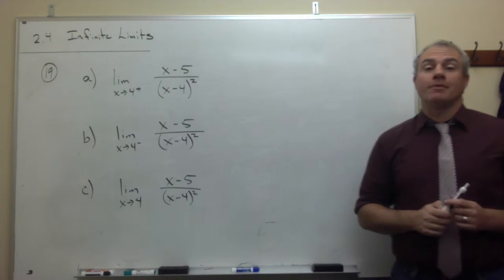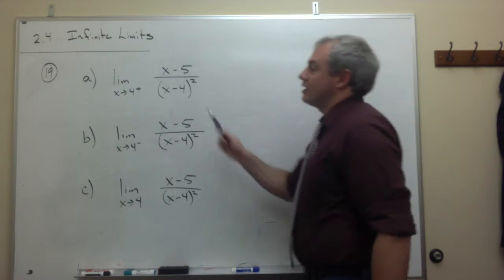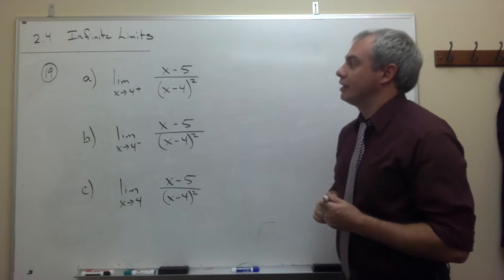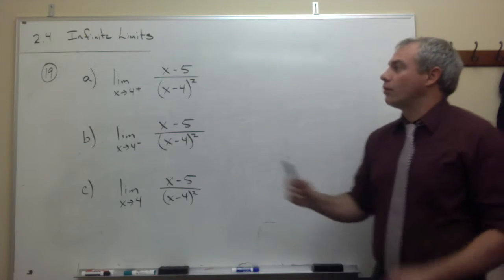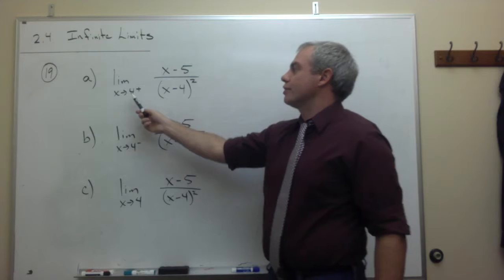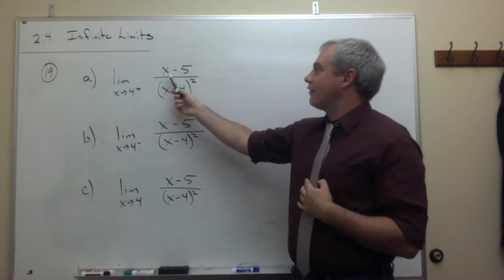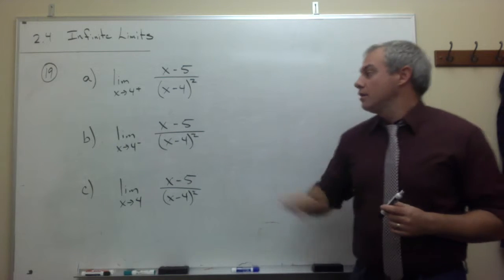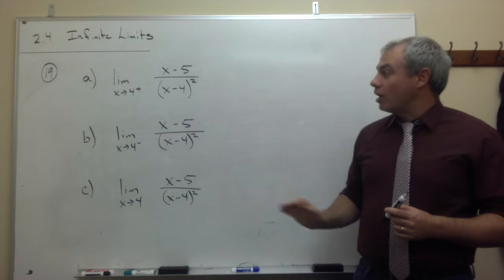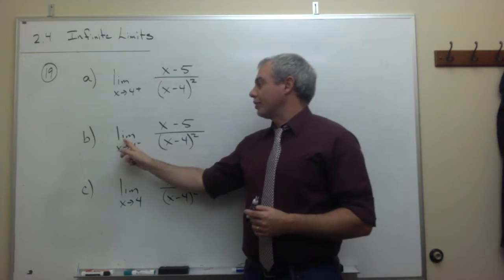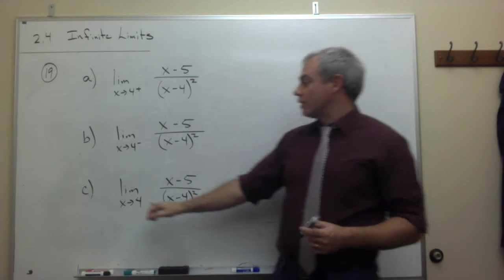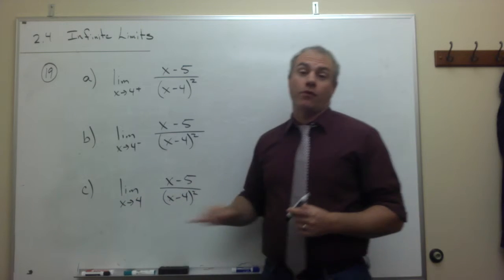Now let's take a look at problem number 19. In problem 19, we have three parts. We want to calculate these three limits. First of all, we want to calculate the limit as x goes to 4 from the right of x minus 5 over x minus 4 quantity squared. Second, same problem, the only difference is we're going to calculate the limit as x goes to 4 from the left. And then finally, we just want to calculate the limit as x goes to 4.